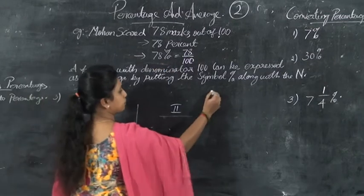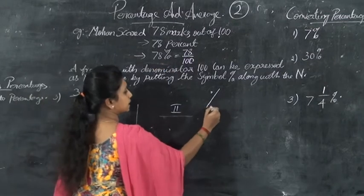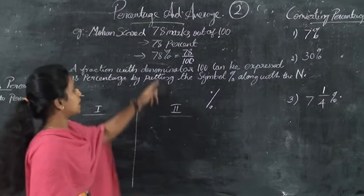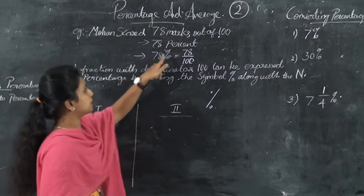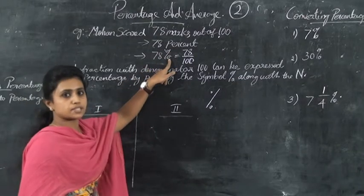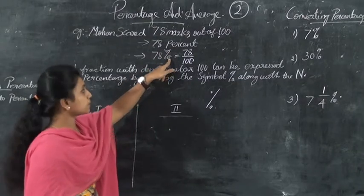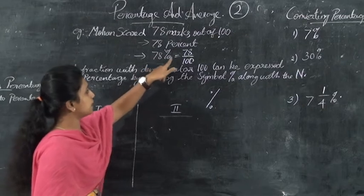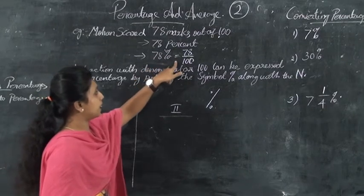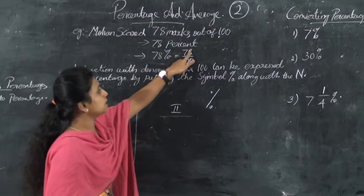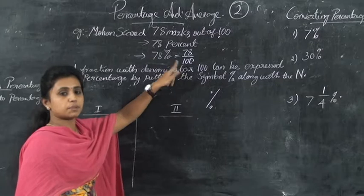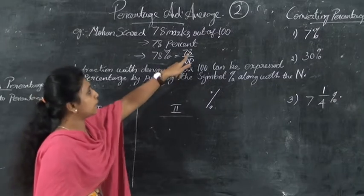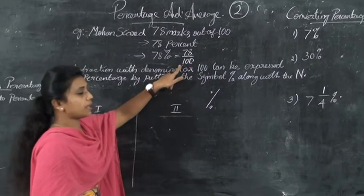The symbol that is used to represent percent is this — the % symbol. Now, 78 percent can be written as 78 by hundred, because percent means out of hundred.